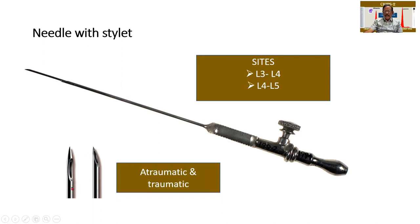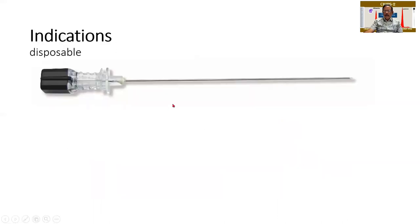There are a couple of needles — they are atraumatic and traumatic. Some needles have a relatively blunt tip whereas in others there is an open tip, which can cause some damage. There are also disposable needles nowadays; needles can be reusable or disposable. This is again a picture of it, and there will be a stillet within. All needles will have a stillet to prevent damage to the tissue.